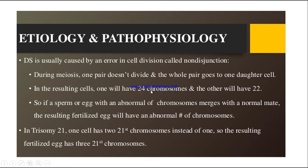In the resulting cells, one will have 24 chromosomes and the other will have 22 chromosomes. So if a sperm or an egg with an abnormal chromosome merges with a normal one during fertilization, the resulting fertilized egg will have an abnormal number of chromosomes because that one pair did not divide and went directly into the daughter cell.